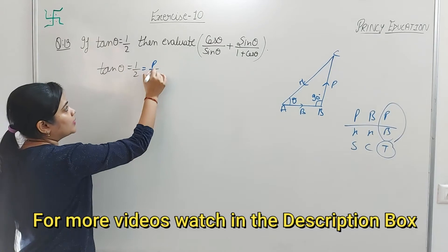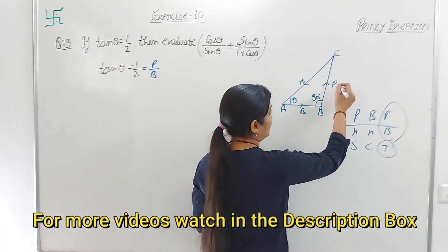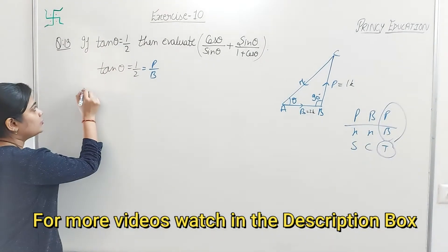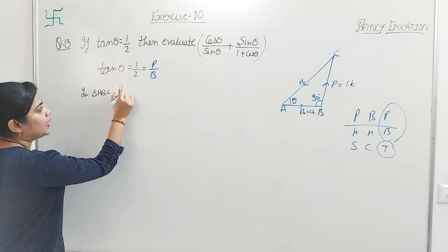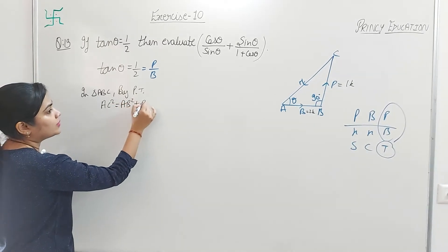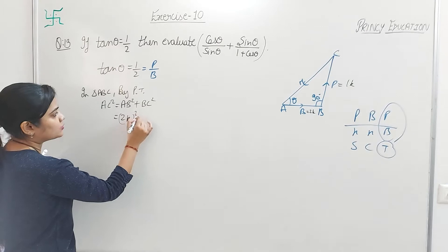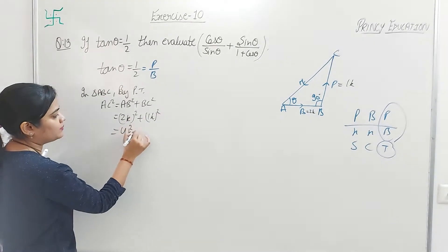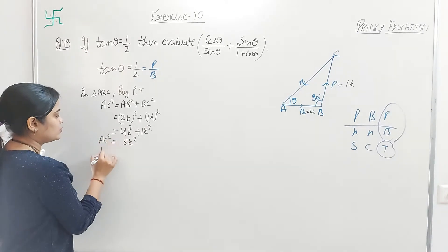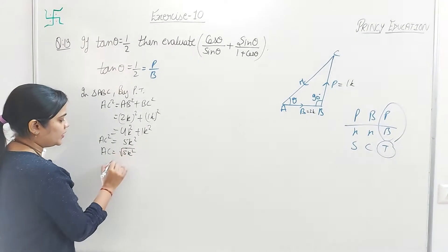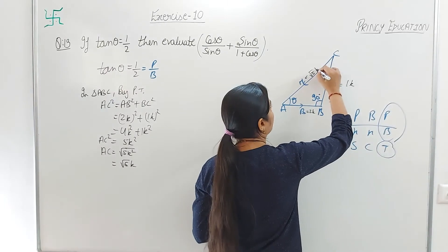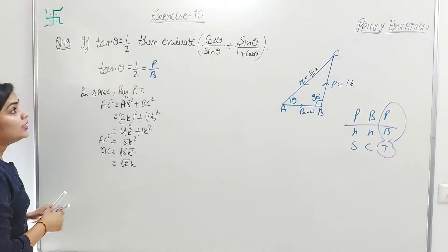Since tan θ equals 1/2, perpendicular upon base equals 1k upon 2k. Now find the value of hypotenuse. In triangle ABC, by Pythagoras theorem: AC² = AB² + BC². So AC² = (2k)² + (1k)² = 4k² + k² = 5k². Therefore AC = √(5k²) = k√5. So hypotenuse = k√5.